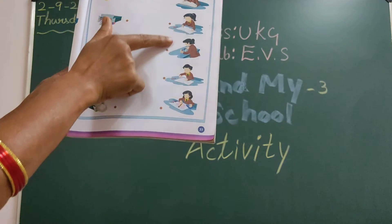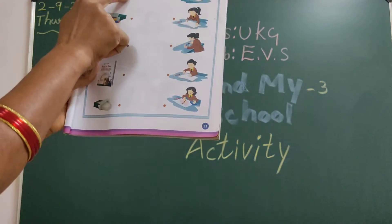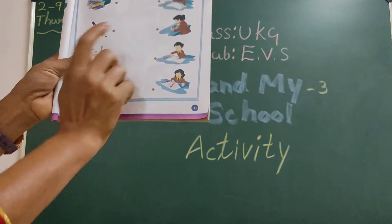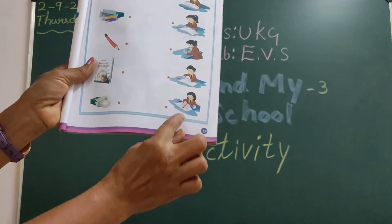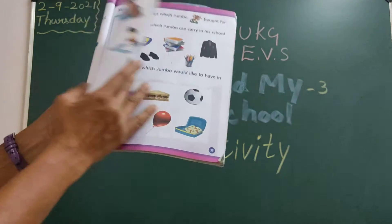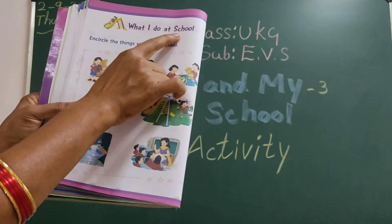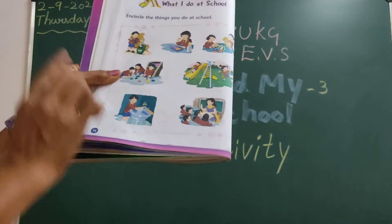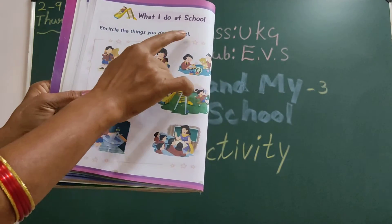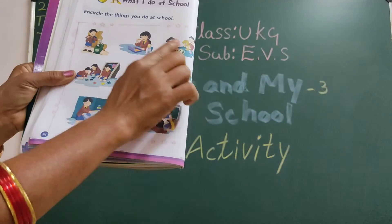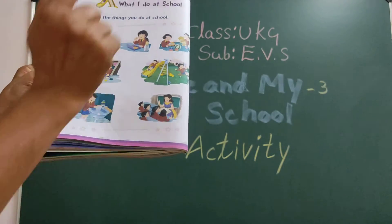You have to search and match, children. So here she is shopping — like this, dot to dot you have to match it. See the picture on this side and this side, and match it neatly. What I do at school — circle the things you do at school. You have to see each picture one by one and circle it.